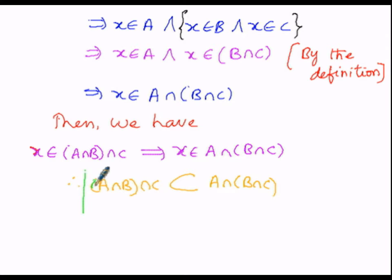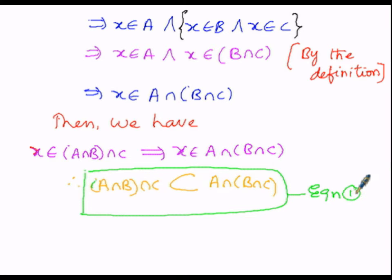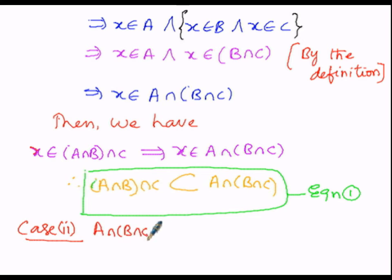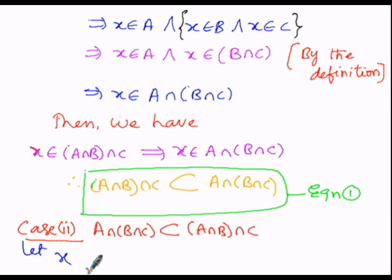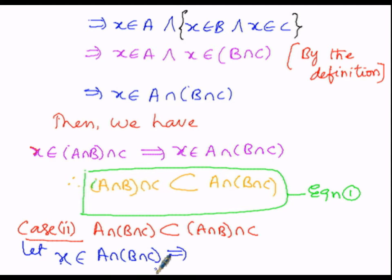We have proved the first condition — let us label this as equation number 1. Now let us go to Case 2, where we have to prove RHS is a subset of LHS, that is A intersection of B intersection C must be a subset of A intersection B intersection C. Since we are proving by element-wise method, suppose x belongs to the LHS, that is A intersection of B intersection C. That implies x belongs to A — intersection means and — and x also belongs to the second bracket, B intersection C.